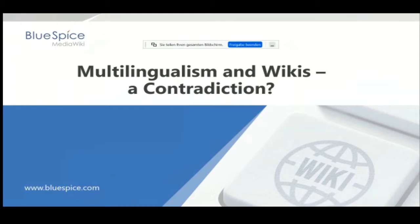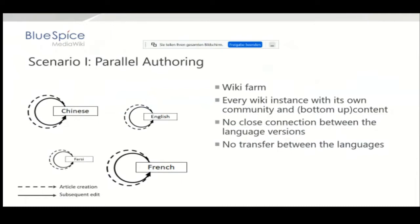I would like to start with the first scenario, which is the biggest multilingual wiki in the world — Wikipedia — and I call this scenario parallel authoring. I got this term from a scientific paper and I think it fits very well, because you have a big number of wikis in a wiki farm, and each wiki presents a language version.